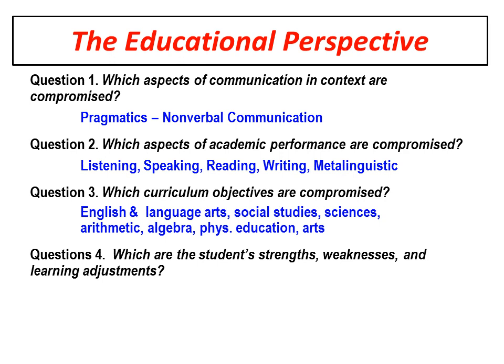The educational perspective is another very important one. What aspects of communication in context are compromised? We'll talk a lot about that today — pragmatics and non-verbal communication. What aspects of academic performance are compromised? What aspects of listening, speaking, reading, writing, and the meta properties? Practically speaking, what are the things that he struggles to do, say, make, and use in school? You also look at what curriculum objectives are compromised — English language arts, social studies, sciences, math, arts. And what are the student's strengths, weaknesses, and learning adjustments?